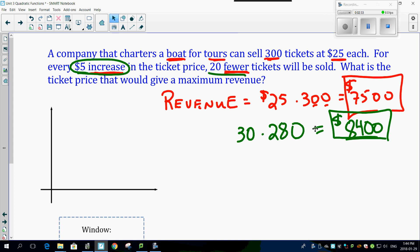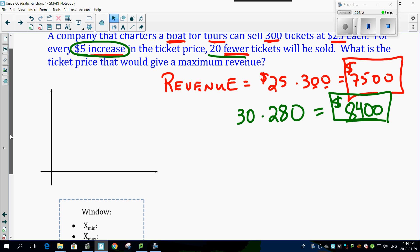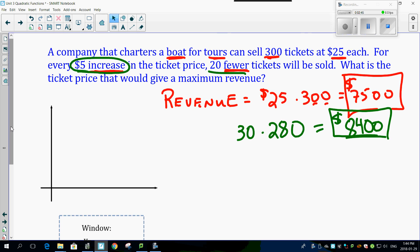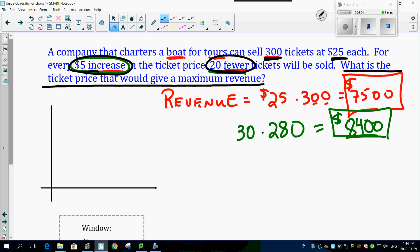So let's see if we can actually figure out a few things here in terms of quadratic equations. Let's set this up as a quadratic, graph it and see what we can do. So a company that charters the boat for tours can sell 300 tickets at $25 each. For a $5 increase in the ticket price, 20 fewer tickets will be sold. My question is, what is the ticket price that would give the maximum revenue?